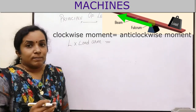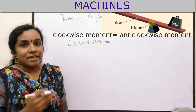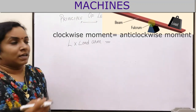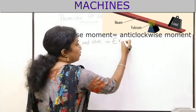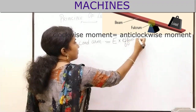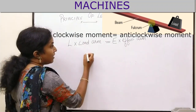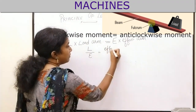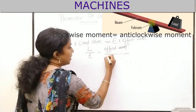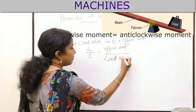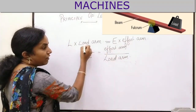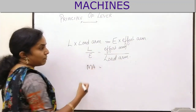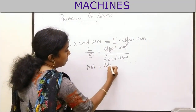The clockwise moment is load multiplied by load arm, and the anti-clockwise moment is effort multiplied by effort arm. On rearranging, we get load divided by effort equals effort arm divided by load arm. The ratio of load to effort is called mechanical advantage. Hence, mechanical advantage equals effort arm divided by load arm. In the ideal case, mechanical advantage equals velocity ratio. Hence, velocity ratio also equals effort arm divided by load arm.